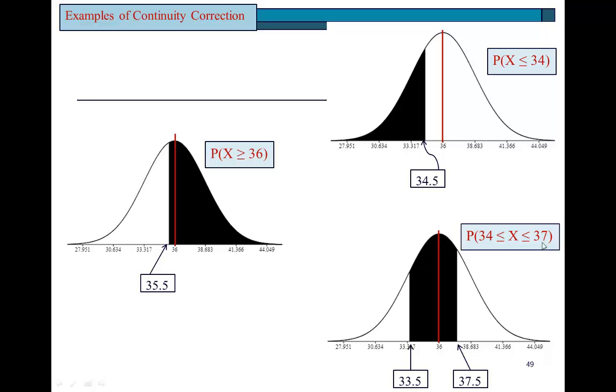And finally, between 34 and 37, those two numbers are inclusive, as you can see, because these are weak inequalities. It means you have to start from 35.5, you back up a little bit so that 34 is included. And on the right side, you end at 37.5 to make sure that the number 37 is also included within the space. So, these are some few examples of continuity correction.